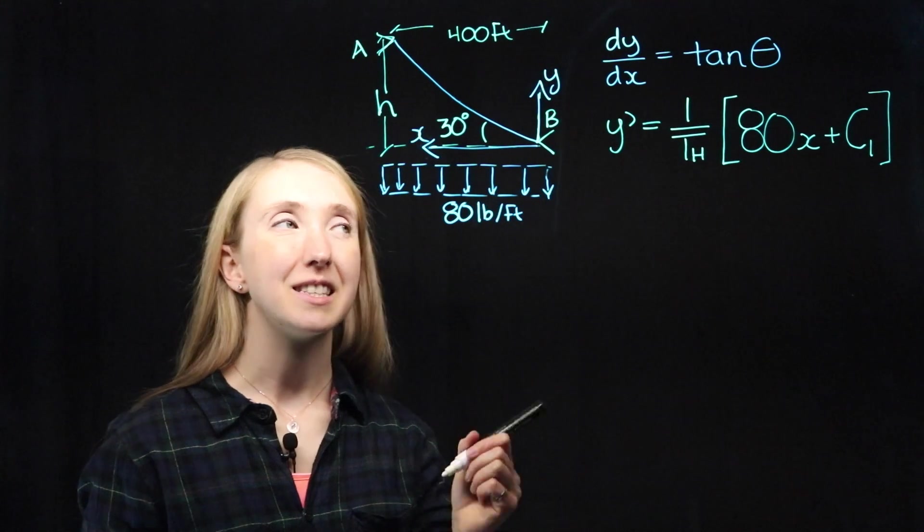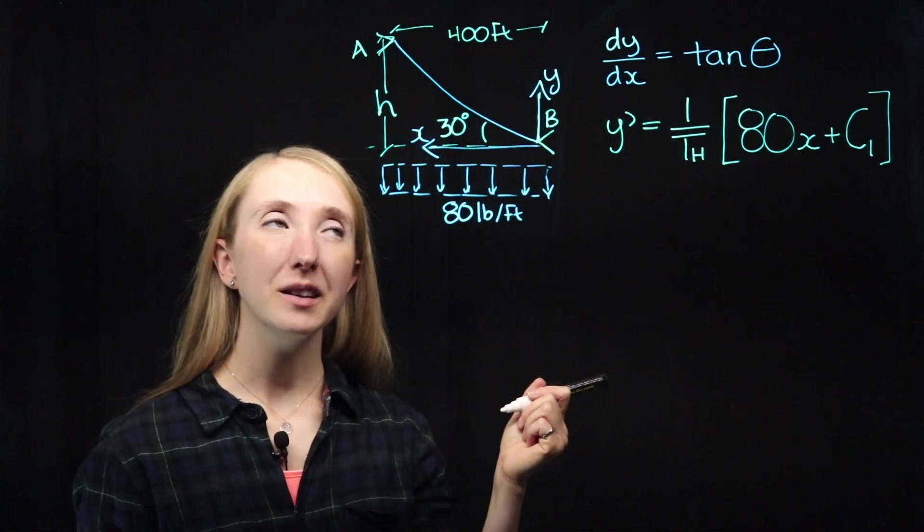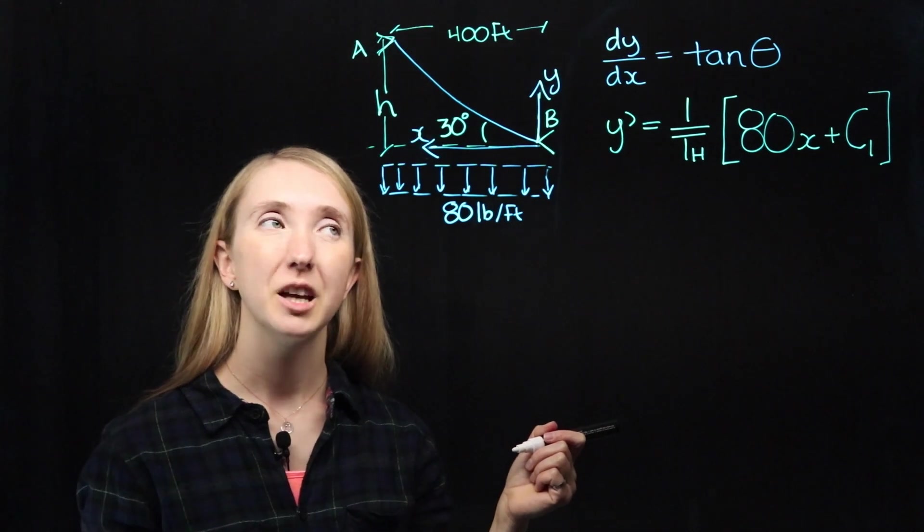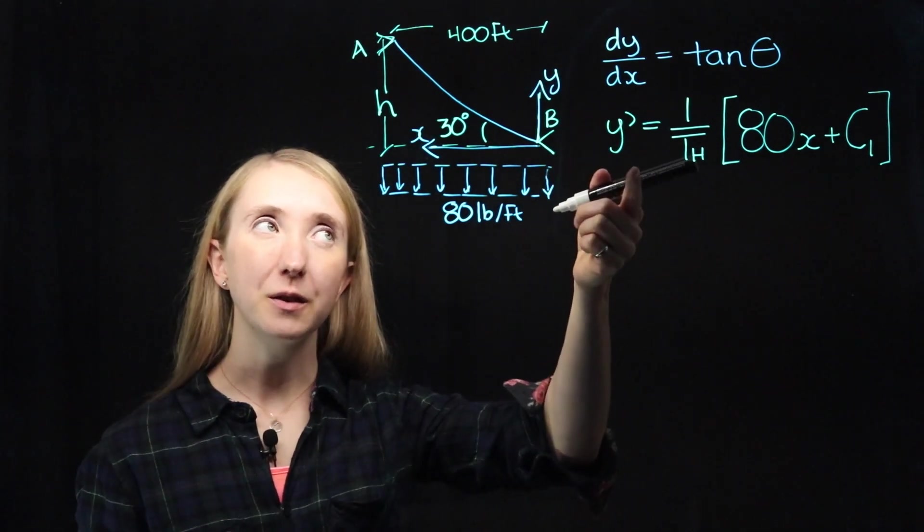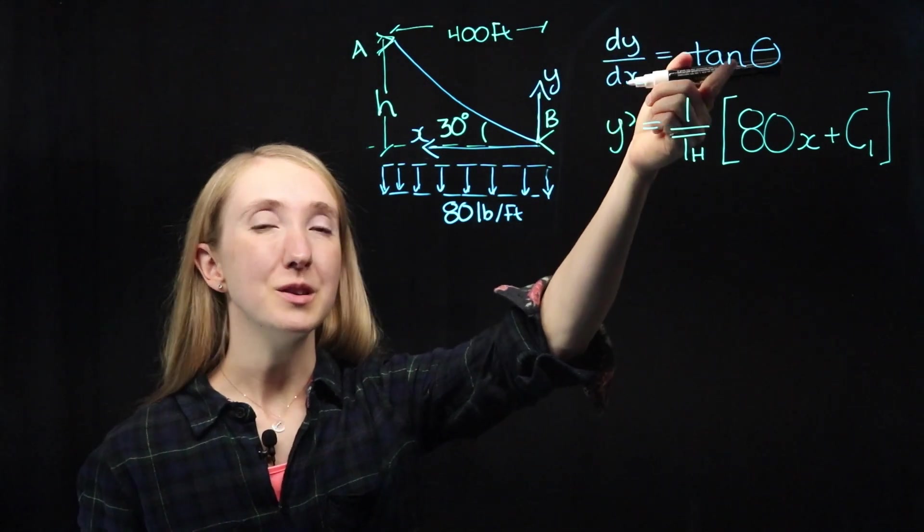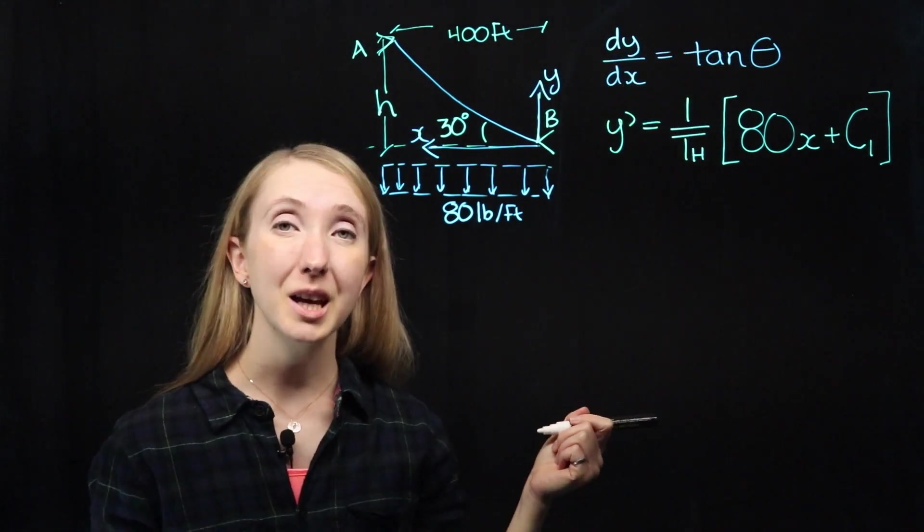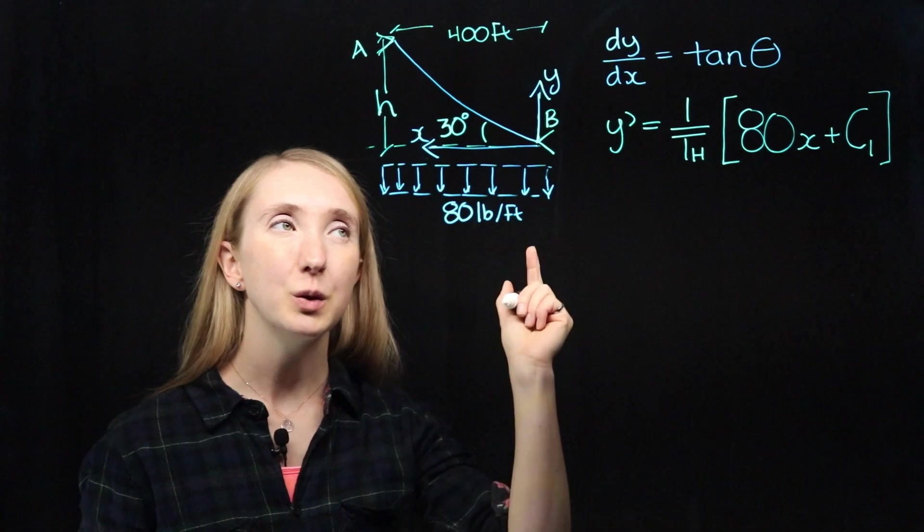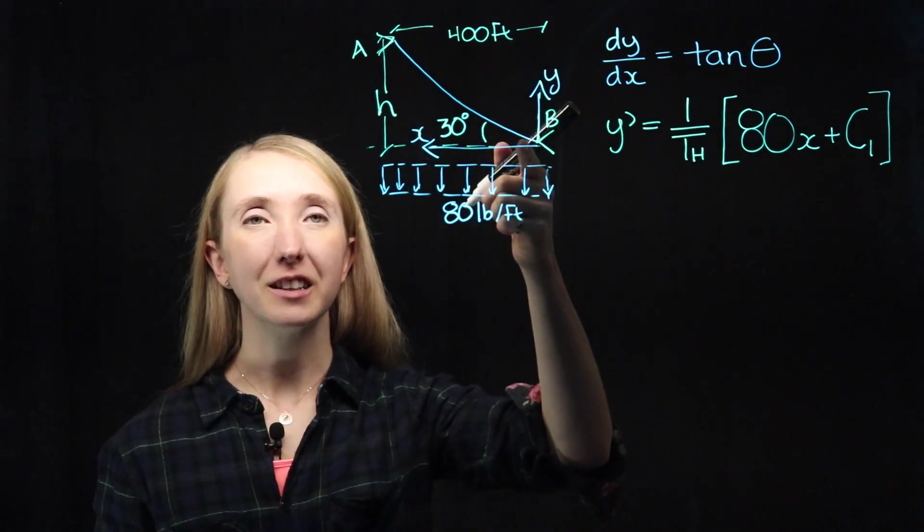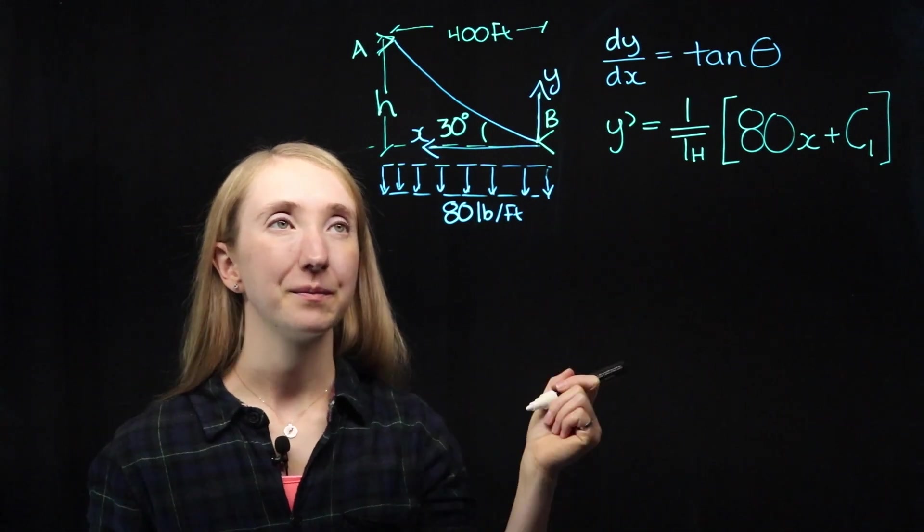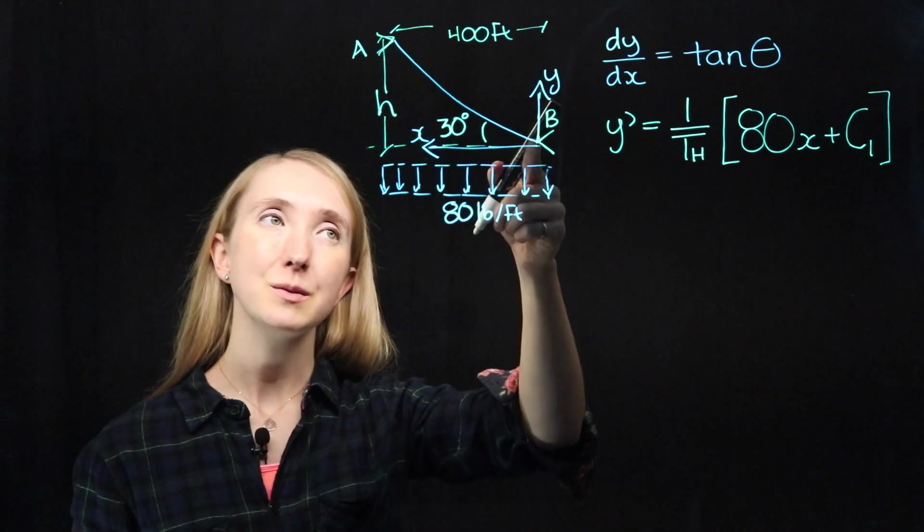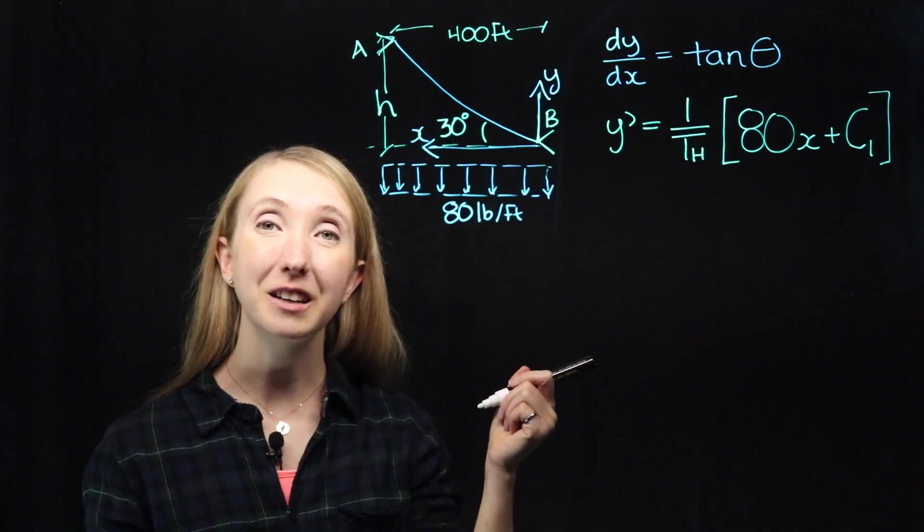To find our remaining constant C1, I've started by already taking the derivative of our shape equation. Remember, the derivative is just equal to our slope, which is equal to the tangent of the angle our cable makes. We can use this equation and a boundary condition at the origin to help us find C1. Because we know the angle that our cable is making at the origin: 30 degrees.